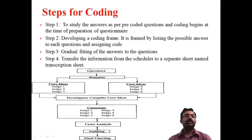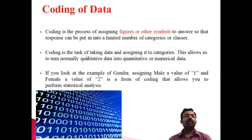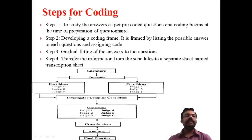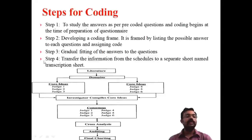Once coding is complete, the coding frame is essential for completing the activities and must be transferred to a separate sheet known as the transcription sheet. Numbers such as 1, 2, 3, 4 are essential for the coding activity. So these are the steps for coding: study pre-coded answers, develop the coding frame, gradual fitting, and transfer to transcription sheet.